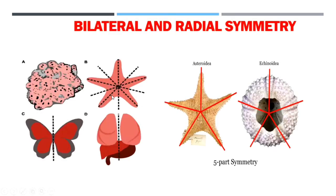Before discussing features of different phyla, we need to know about bilateral and radial symmetry. Symmetry means if you cut through the central part, you get two identical parts. Bilateral symmetry means you can cut through one axis and find mirror images — the right and left parts of the organism. Organisms with bilateral symmetry contain a single plane of symmetry called the sagittal plane. Cutting through this plane gives you the right part and left part, which are mirror images.